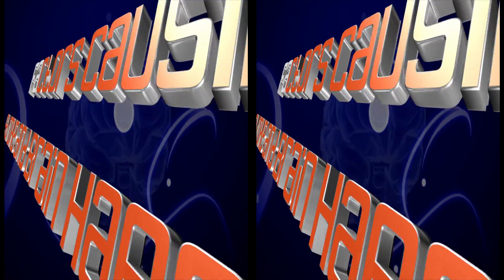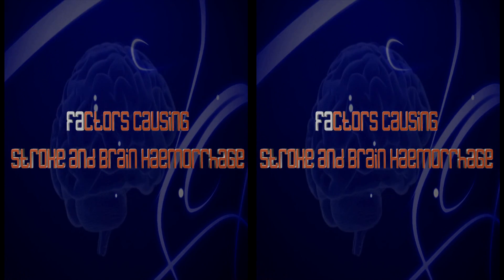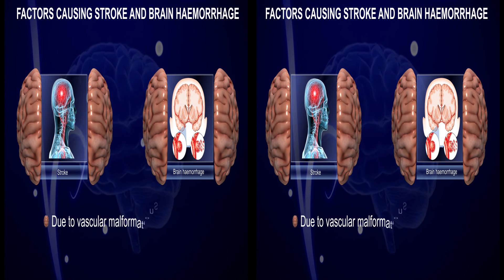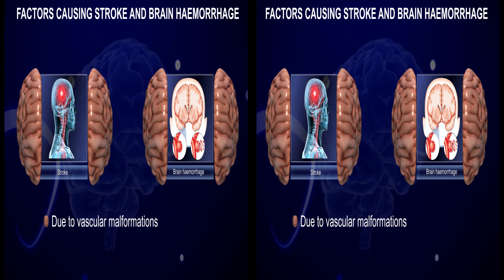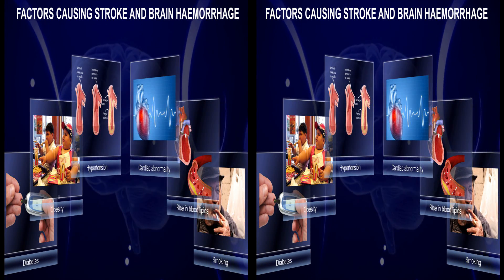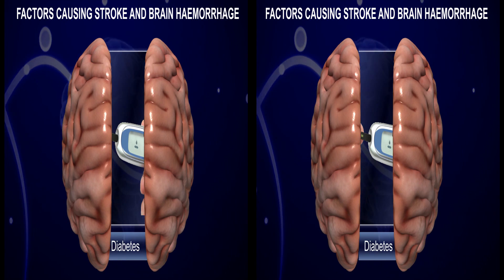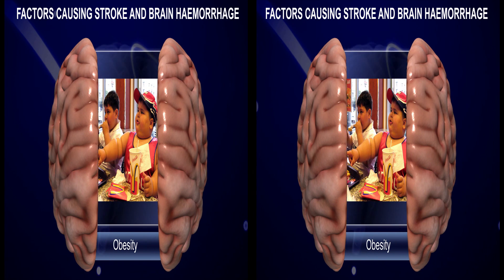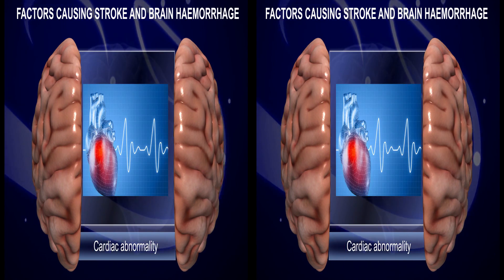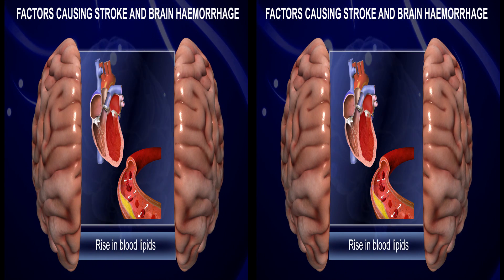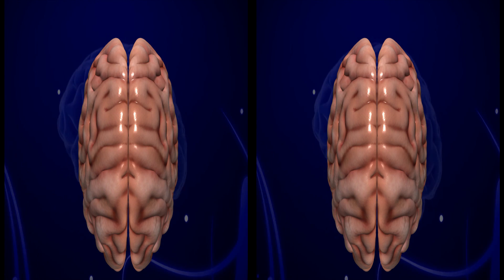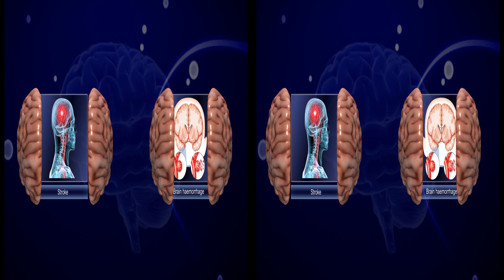Stroke and brain hemorrhage are generally due to vascular malformations. There are several factors that lead to stroke and brain hemorrhage. They are: diabetes, obesity, hypertension, cardiac abnormalities, rise in blood lipids, and smoking. With this we have learned about stroke and brain hemorrhage.